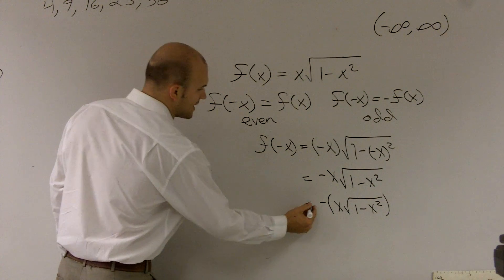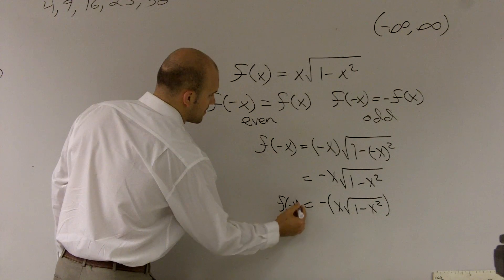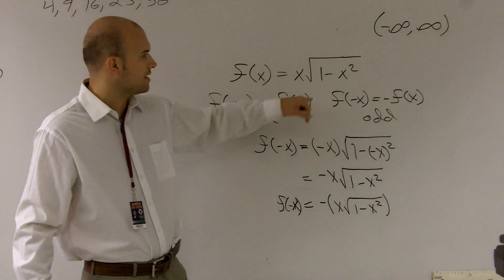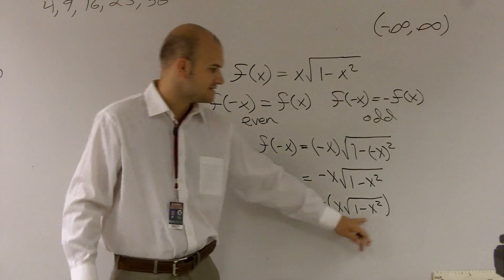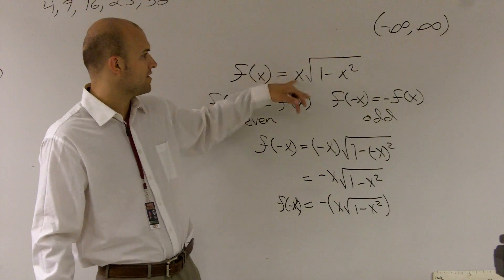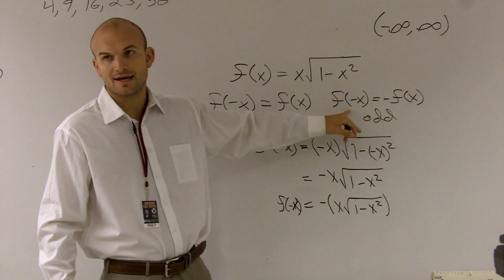So what you guys can see is when I factored this back out, what I obtained is, is this now still my f of x? And I go and look up my f of x, my function, and yes, that's the exact same function. So therefore, I have an odd function.